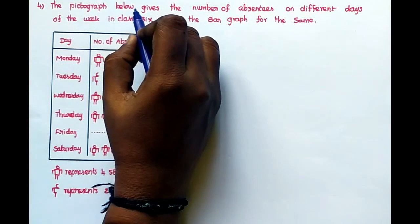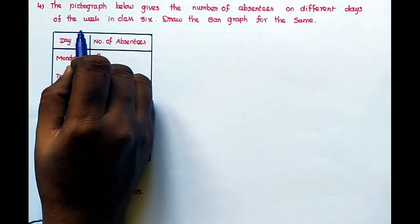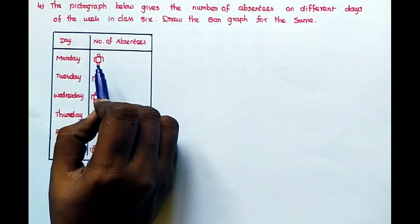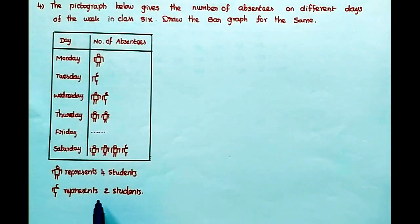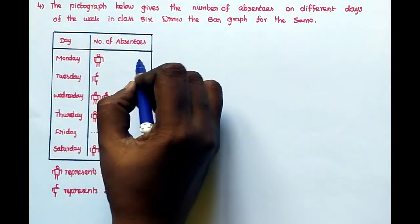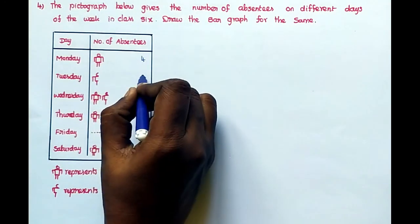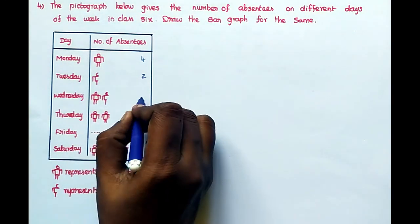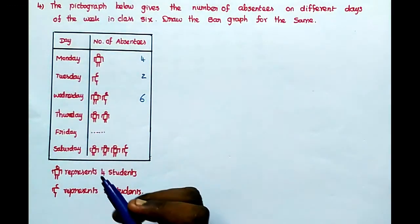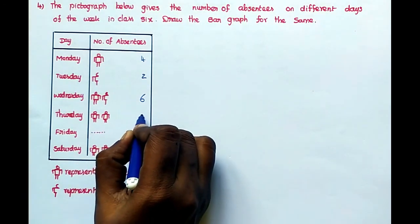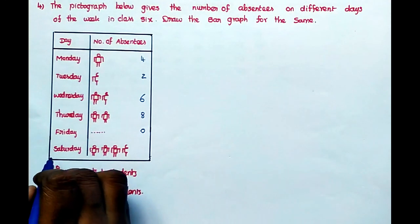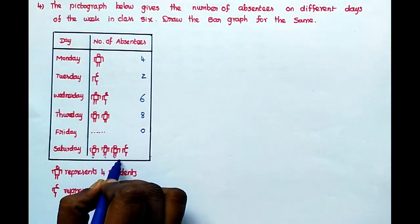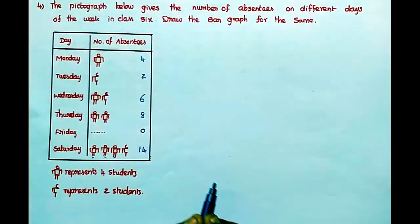Fourth problem. The pictograph below gives the number of absentees on different days of the week in class six. Draw the bar graph for the same. Listen, like this toy, one toy represents four students and half represents two students. So on Monday, four students; Tuesday, two; Wednesday, one full is four, half is two, so totally six students. And then Thursday, two full toys is there, so four plus four, eight. Friday is zero. And Saturday, four, four, four, twelve, plus two, fourteen.